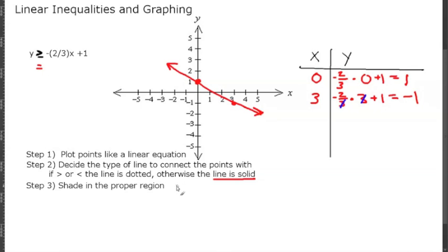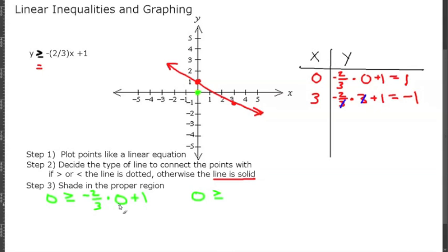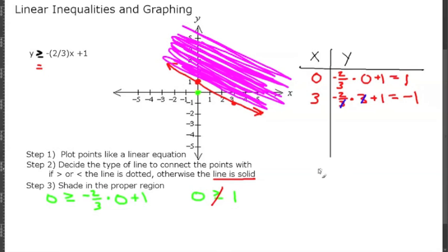Our last step is to shade in the proper region, and for that we need a test point. Let's test the point (0, 0). Plugging 0 in for y and 0 in for x: 0 is greater than or equal to negative 2/3 times 0 plus 1, which simplifies to 0 is greater than or equal to 1. We know that this is not true, so we're going to shade in the opposite region.